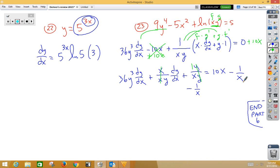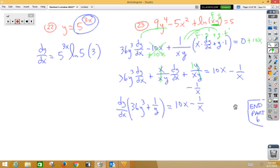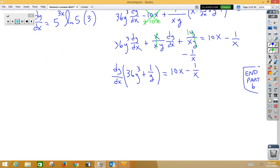We now can factor out a dy/dx. So, dy/dx inside is 36y cubed plus 1 over y is equal to 10x minus 1 over x. We can now divide this term to the other side. We have dy/dx is equal to 10x minus 1 over x over a 36y cubed plus 1 over y.